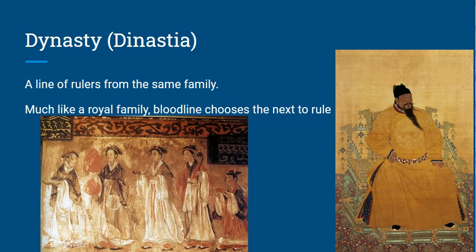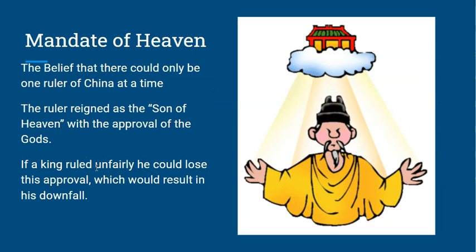Speaking of dynasties, there's this idea called the Mandate of Heaven. The Mandate of Heaven is the belief that there could only be one ruler at a time in China. The ruler reigns as the son of heaven — approved by the gods. If a king is ruled to be unfair, he could lose this approval. He could raise taxes, enforce strict laws, or just be a bad ruler, and the gods would take away his title.